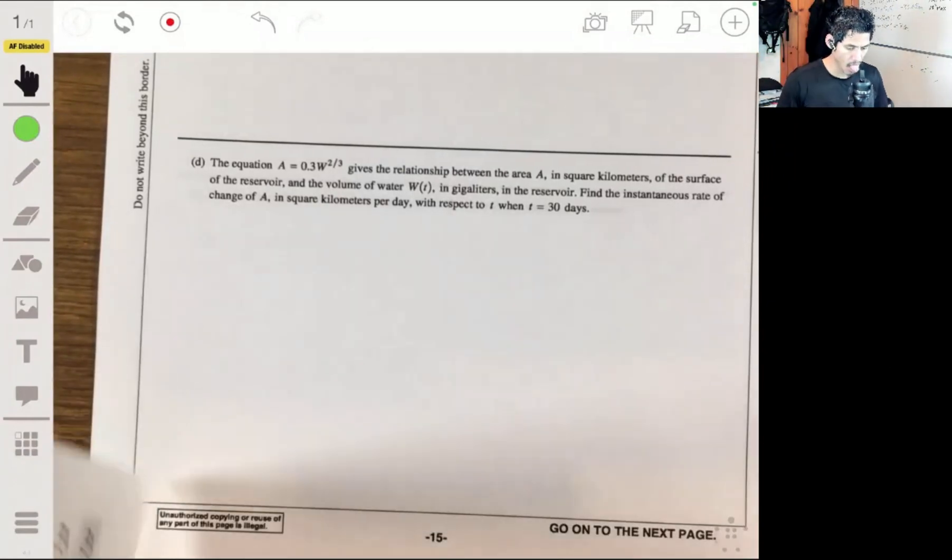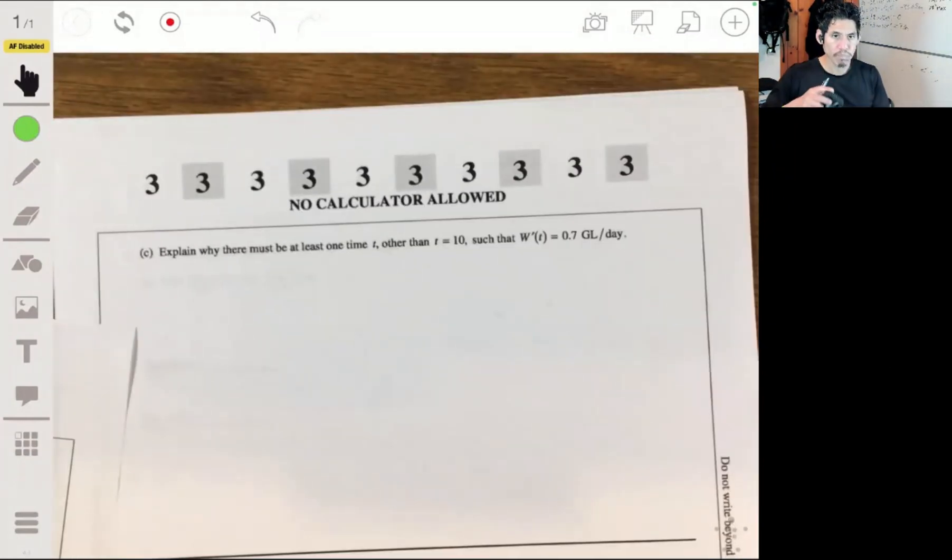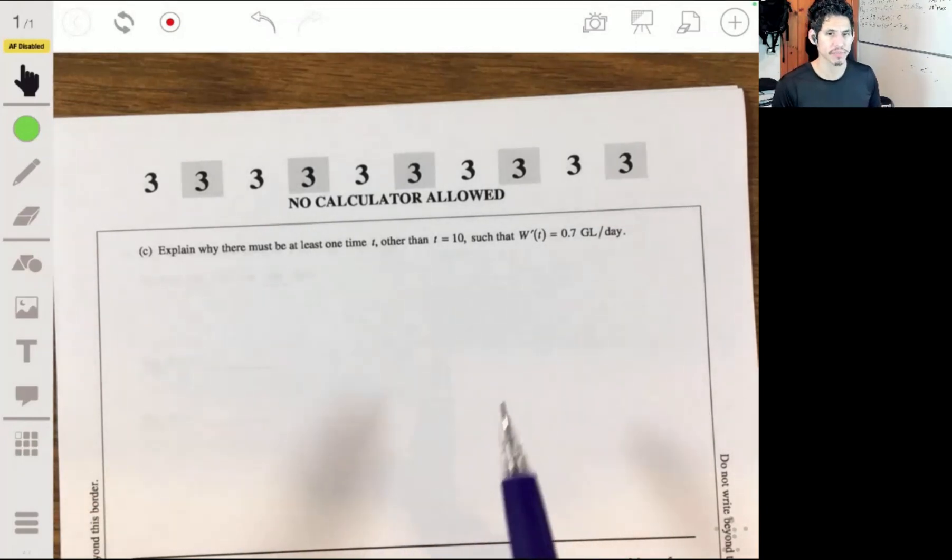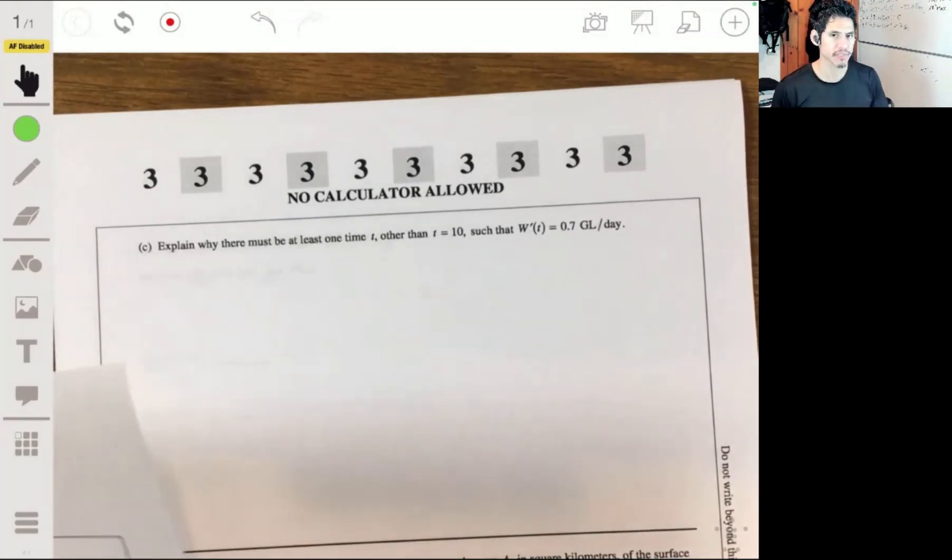All right, now part C. Explain why there must be at least one time t other than t equals 10, such that w prime of t equals 0.7 gigaliters per day.